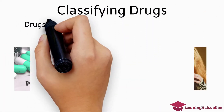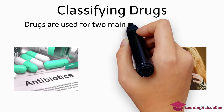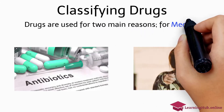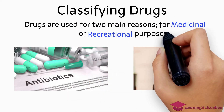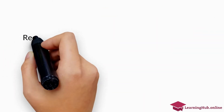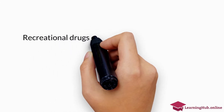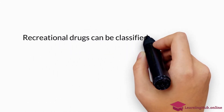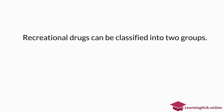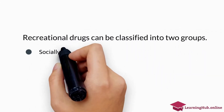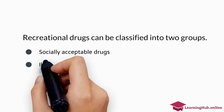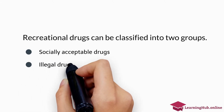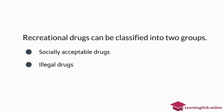Drugs are used for two main reasons: for medicinal or recreational purposes. Recreational drugs can be classified into two groups: socially acceptable drugs and illegal drugs.